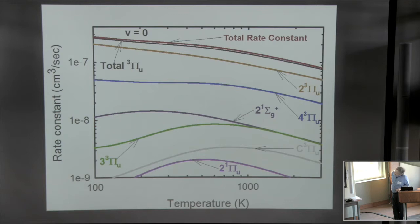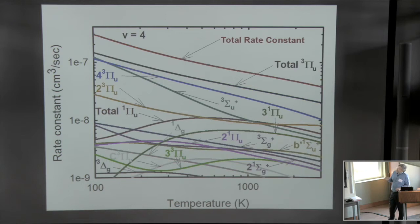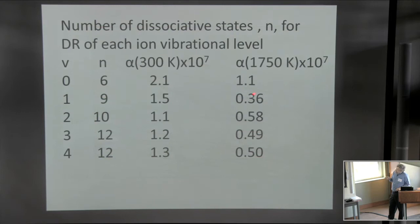Hopefully soon we'll have a higher resolution experiment on N2+. Now this is the total rate constant for v=0 shown in red and all the contributing states. All I want to mention here is that there are six contributing states, each of which has a rate constant above 1×10^-9, contributing to the dissociative recombination from v=0. This is v=4, and you can see that we have many more states contributing to that rate coefficient, having contributions above 1×10^-9. In fact, there are 12 states here contributing to the cross section.